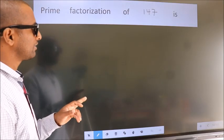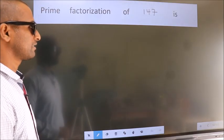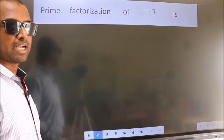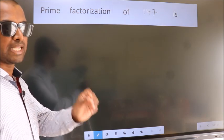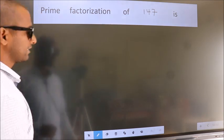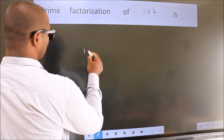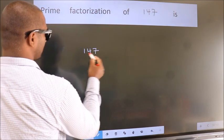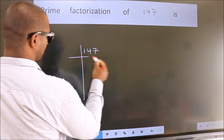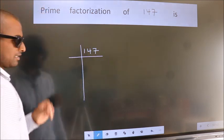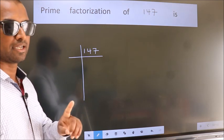Prime factorization of 147. To do prime factorization, we should frame it in this way. 147 here. This is step 1.